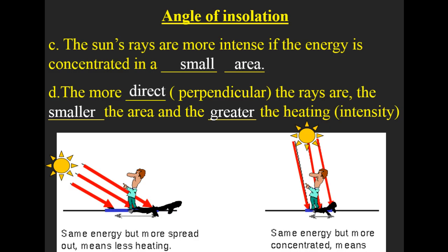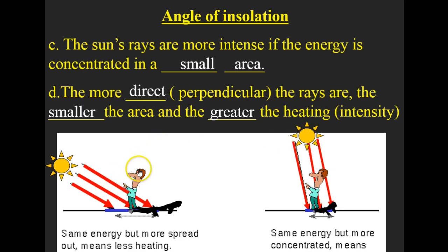So in this little diagram, the person standing right under those direct rays is going to get a sunburn faster than the person over here, because those rays are more perpendicular to where he's standing, causing more heat and more intense heat.